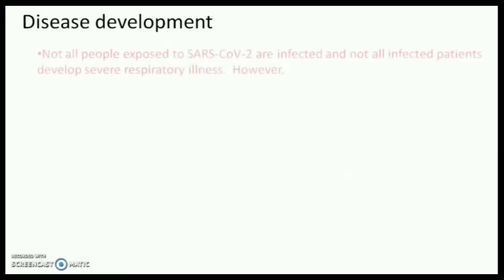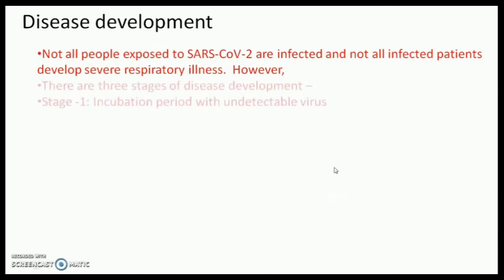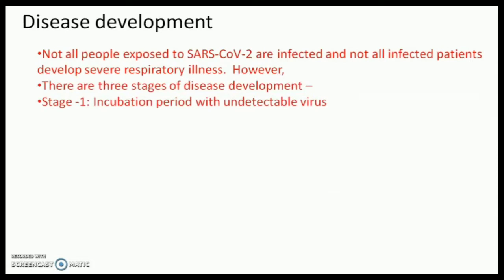Now regarding disease development: not all people who are exposed to SARS-CoV-2 get infected, and not all infected persons develop severe respiratory illness. However, if a person develops the disease, there are three stages. Stage 1 is the incubation period, which is 2 to 14 days, but the virus is undetectable at this stage.